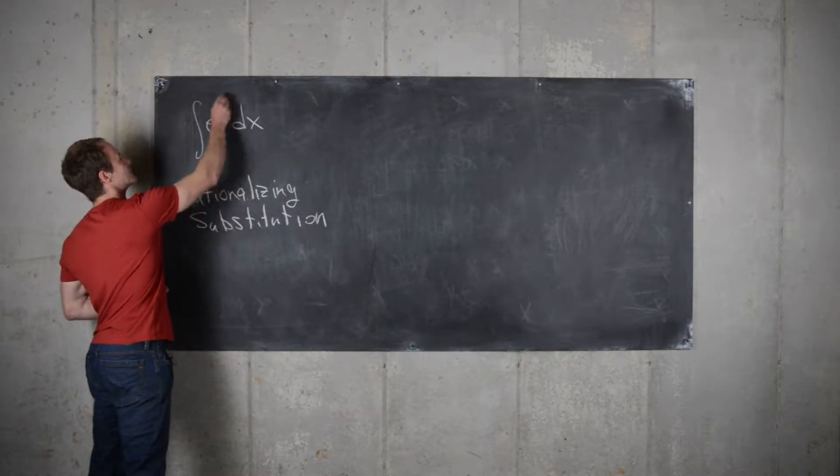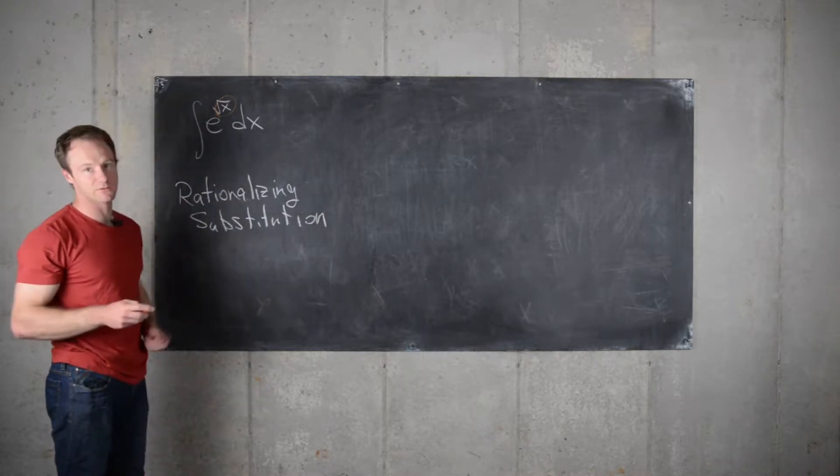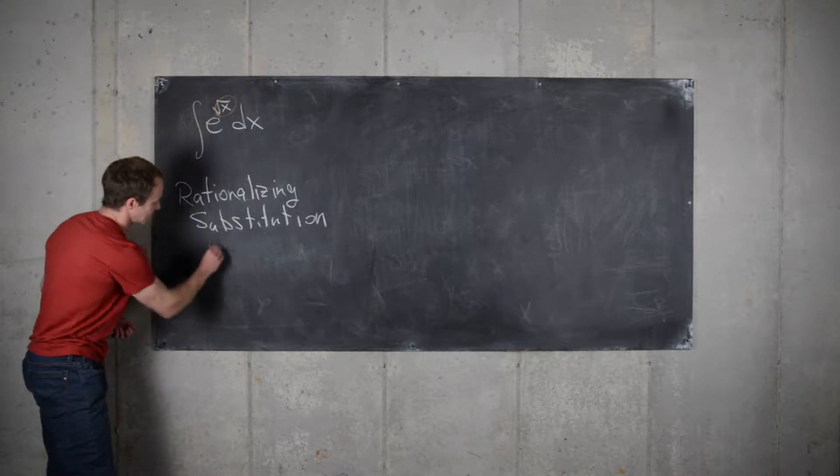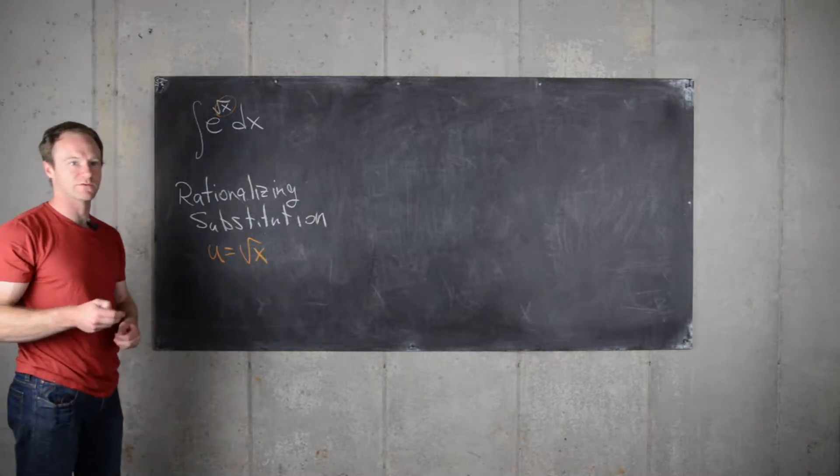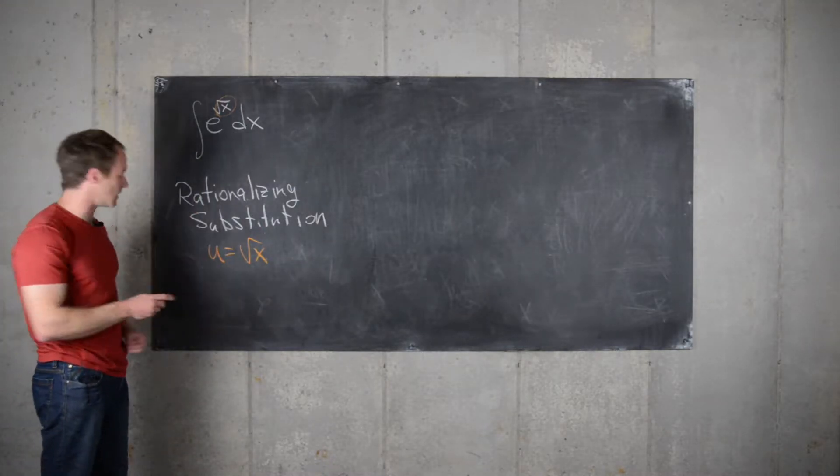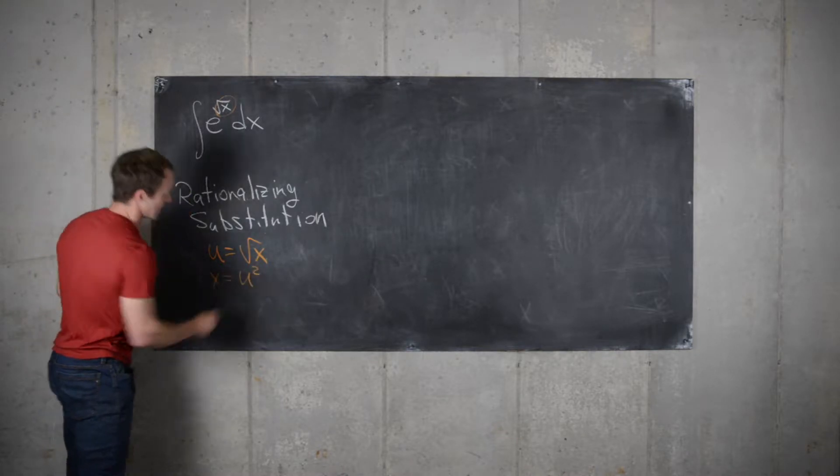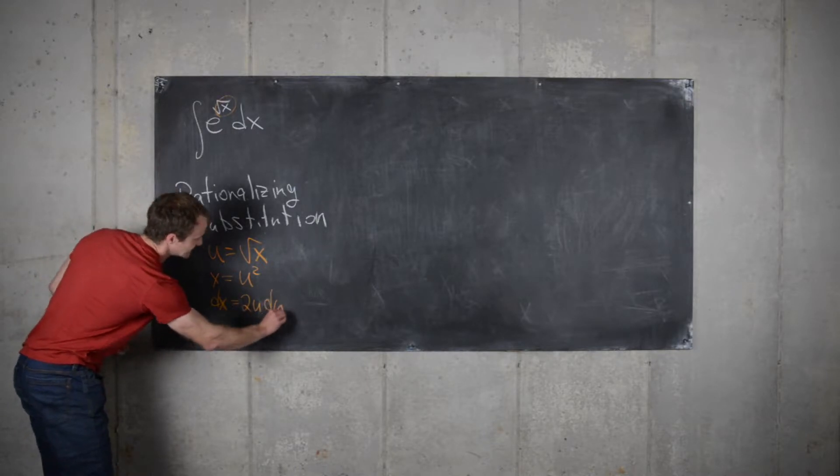The first thing that we notice is we have the square root of x and the exponent of e, so we're integrating e to the square root of x dx. So, we're going to start off with that substitution for u. So, u equals square root of x, but now we're going to solve for x. So, we'll get x equals u squared, and then dx equals 2u du.